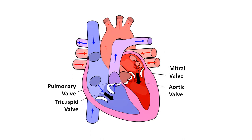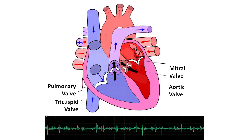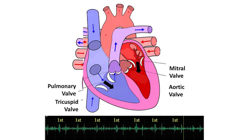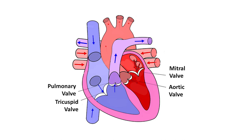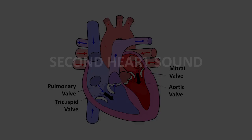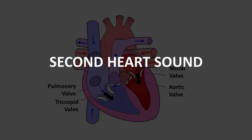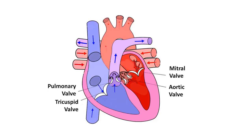The mitral valve closes almost at the same time as the tricuspid valve, so the two components are not perceived separately. But in certain situations, a physiological doubling of the first sound can be heard, especially during deep inspiration, due to a delay in the closure of the tricuspid valve relative to the mitral valve. The second sound is the result of the vibration of the aortic and pulmonary valves during closure at the beginning of ventricular diastole. It is a higher-pitched sound than the first.